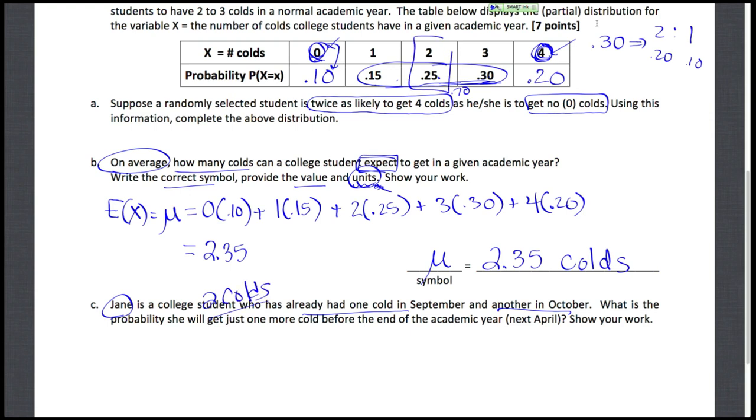She's already had one cold in September and another one October, so she's had 2 colds already. We know that she is already in this part of the distribution right there, but the year is not over yet. We know that Jane could end up being in any part of this section of our distribution, that she wouldn't end up having 0 or 1 colds because she's already on her second cold. Knowing this information about Jane, knowing the fact that she's going to have either 2 colds or more, maybe 3 or 4, we want to find the probability that she'll actually just get 1 more cold before the end of the year.